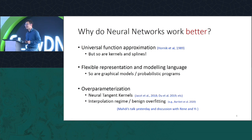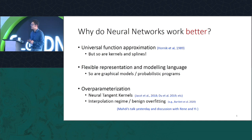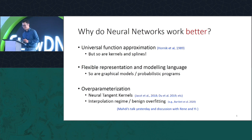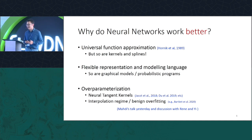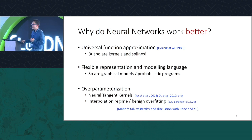I'm going to ask why neural networks work better compared to classical methods. Many people have tried to address this with approximation theory and generalization theory. The famous universal functional approximation theorem says we can use a neural network — even just a two-layer one — to approximate any Lipschitz functions, but so can kernels and splines. People also argue that deep neural networks are a powerful programming language for specifying inductive biases, but so are probabilistic graphical models and probabilistic programs, which are arguably more transparent.